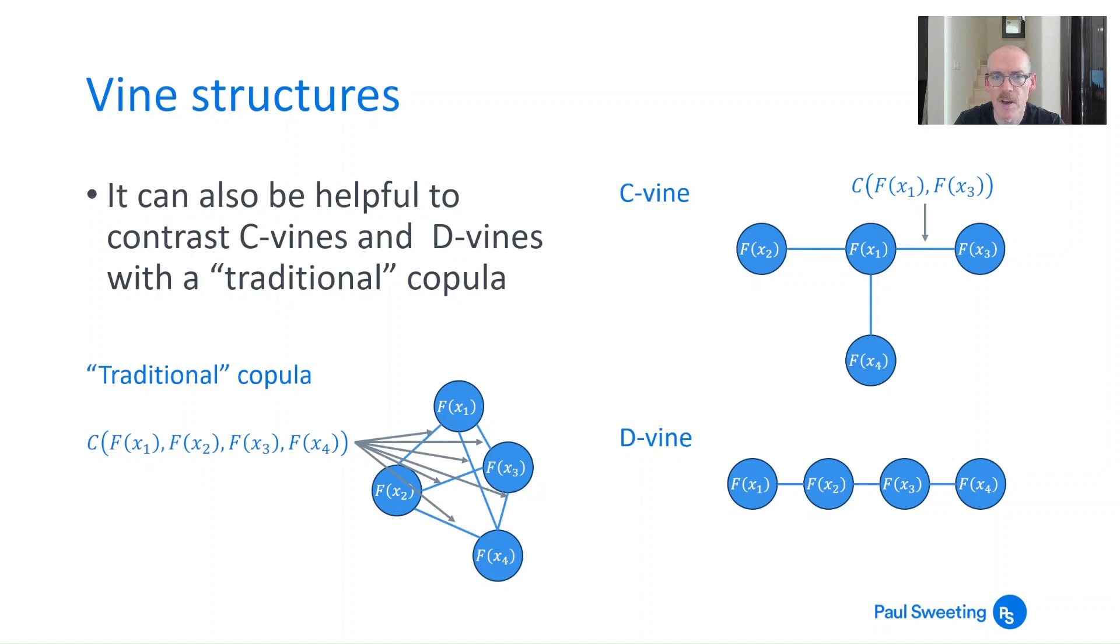Now it can be helpful to contrast C-vines and D-vines with traditional copulas and look at the difference between them. As you can see on the top right we've got a C-vine which has x1 at the center and that's joined to x2, x3 and x4, and x2 and x3 and x4 aren't joined to each other they're only joined to that central node. For a D-vine you've got f(x1) joined to f(x2), f(x2) to f(x3), f(x3) to f(x4). So you haven't got any links between say f(x1) and f(x3), not explicitly anyway. Whereas a traditional copula x1, x2, x3 and x4, so a four variable copula, each of them is connected to each of the other nodes. Or to put it another way, all of those relationships are explicitly defined in that copula.